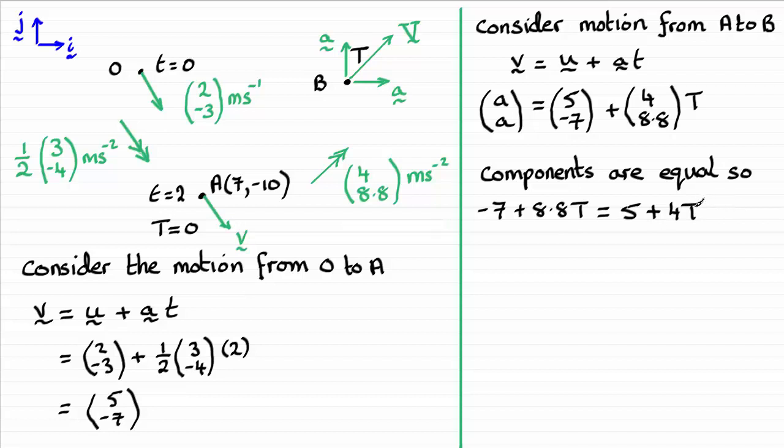Because all I'm going to do is take 4T from both sides and add 7 to both sides. And if you do that, you're going to get 8.8T minus 4T, which is 4.8T. And 5 plus the 7 is 12. So, to get T, obviously, all we need to do is just do 12 divided by 4.8. And that goes in really nicely. It gives you a nice exact value of 2.5, OK? That time T is measured in seconds.